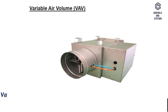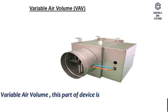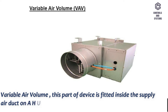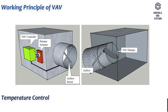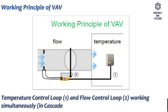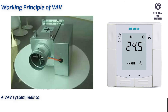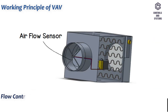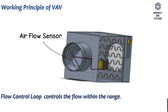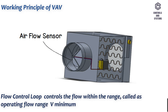Next, VAV — variable air volume. This device is fitted inside the supply air duct on the AHU. The working principle of VAV involves a temperature control loop (1) and a flow control loop (2) working simultaneously in cascade mode to maintain indoor air quality. A VAV system maintains the air supply at a constant temperature while individual zone thermostats vary the flow of air to each space, maintaining the desired zone temperature. The flow control loop controls the flow within the operating flow range: V minimum and V maximum.